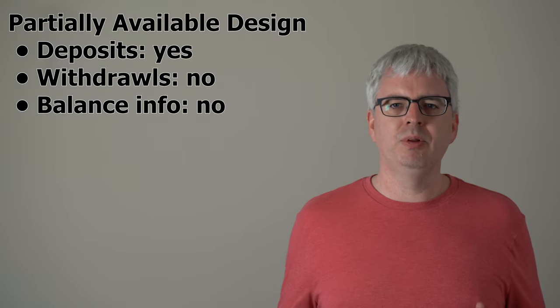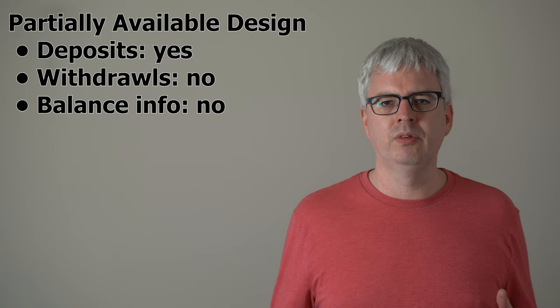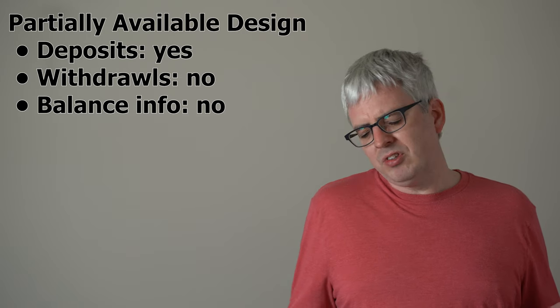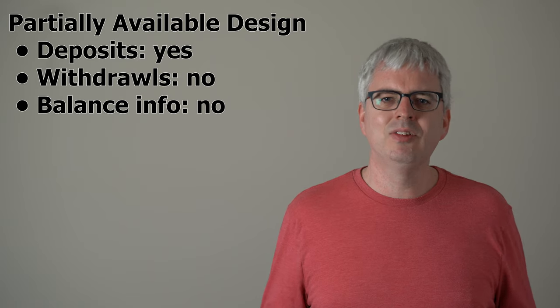For example, when a partition happens, we can have our ATMs accept deposits but not offer balance information or allow withdrawals. So it's only partially available. And that would stop the bank balance from going negative. But it would still have our balances be inconsistent.